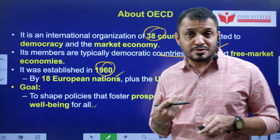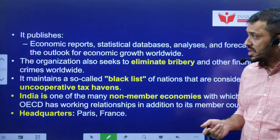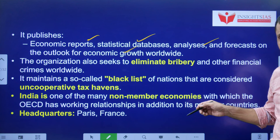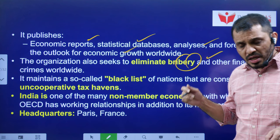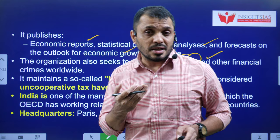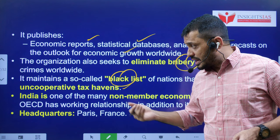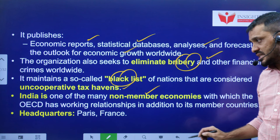OECD publishes various reports such as economic reports, statistical databases, and forecasts on economic growth outlook. It mainly seeks the elimination of bribery. If any country is not cooperating with OECD values or not encouraging fair market practices, that country will be flagged and blacklisted — even if they behave as tax havens. India is not a member of OECD, and OECD headquarters are located in Paris, France.